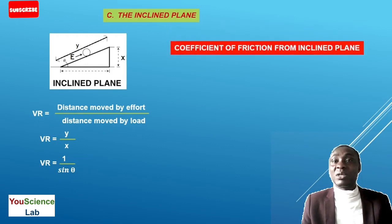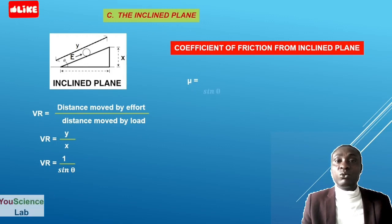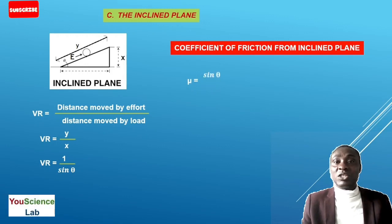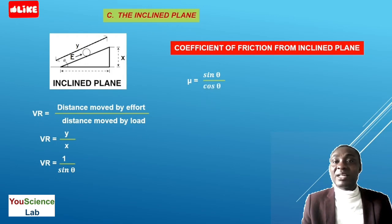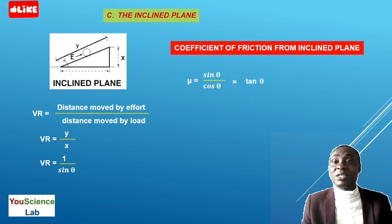The coefficient of friction for the inclined plane can be calculated using mu equals sine theta divided by cos theta, which equals tan theta. So the coefficient of static friction can be calculated using tan theta.